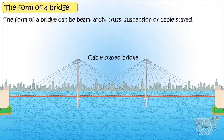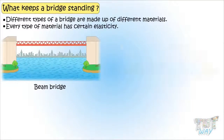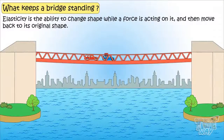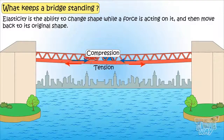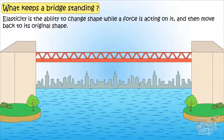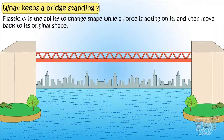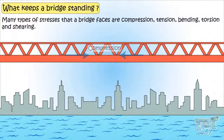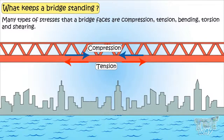We will learn about different types of bridges in our next lesson. Different types of bridges are made up of different materials, and every type of material has certain elasticity — that is, the ability to change shape while a force is acting on it and then move back into its original shape. It is because of this elasticity that bridges experience stress without breaking. The many types of stress a bridge faces are compression, tension, bending, torsion, and shearing.